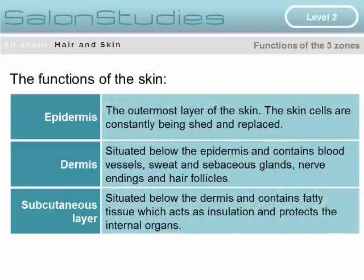The functions of the skin. The epidermis is the outermost layer of the skin where cells are constantly being shed and replaced. In the middle layer, the dermis, situated below the epidermis, contains blood vessels, sweat and sebaceous glands, nerve endings, and hair follicles. The lower layer, the subcutaneous layer, is situated below the dermis and contains fatty tissue which acts as insulation and protects the internal organs.